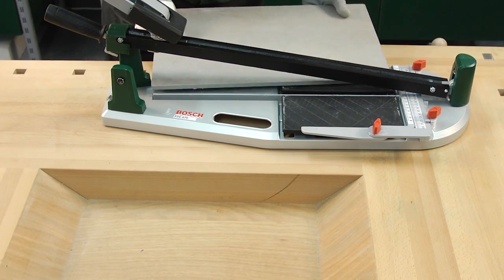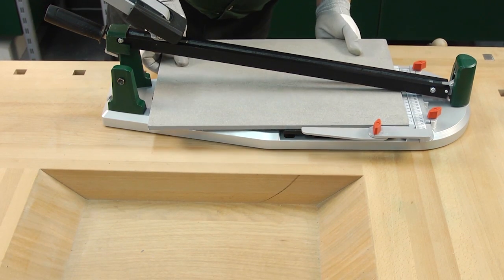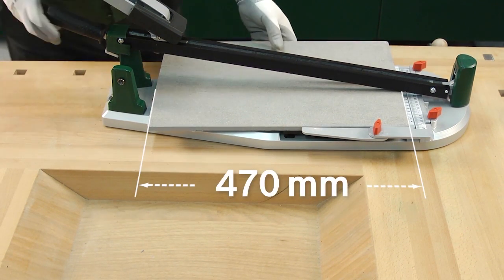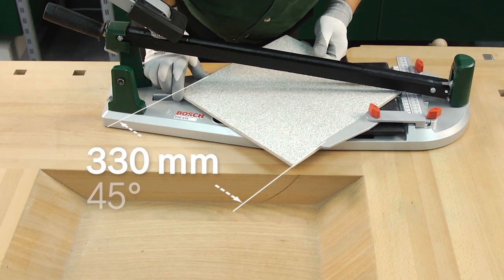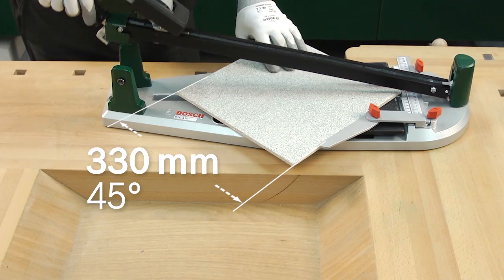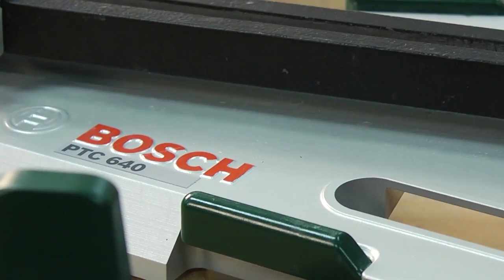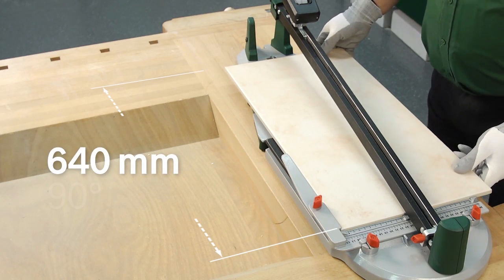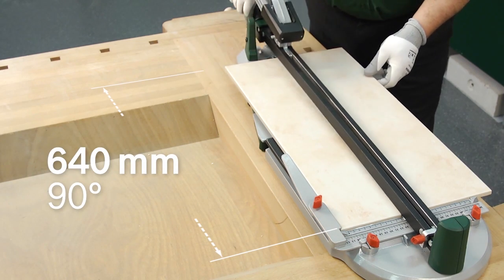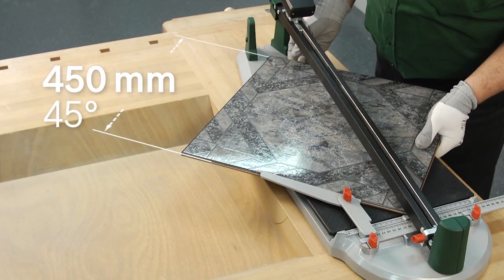The PTC-470 cuts all ceramic tiles up to a width of 470mm at 90 degrees and up to 330mm at 45 degrees. The PTC-640 cuts tiles up to a width of 640mm at 90 degrees and 450mm at 45 degrees.